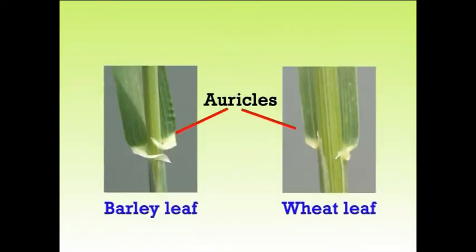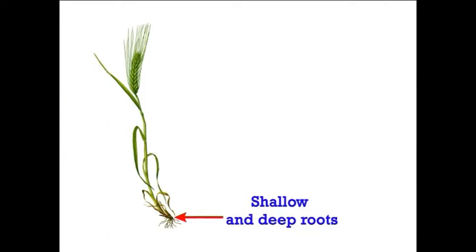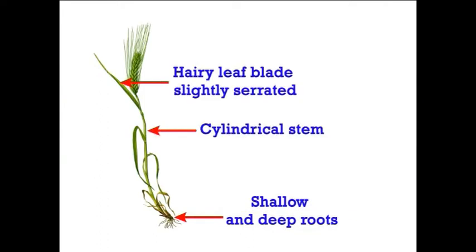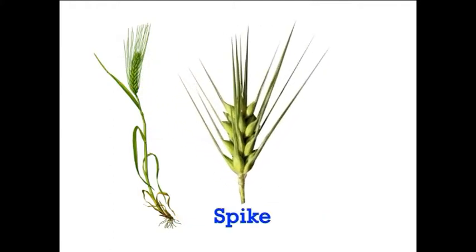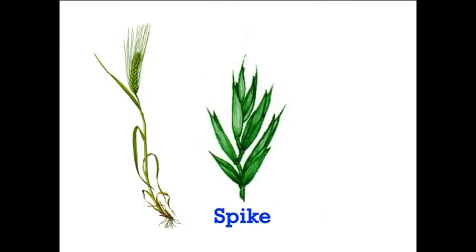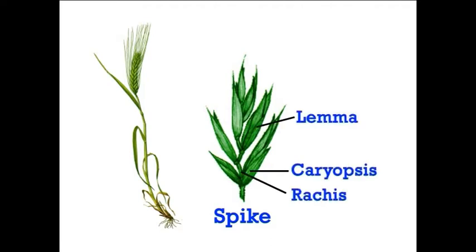All the vegetative characters are like wheat, except that the auricles of the leaf are conspicuous and very much pronounced, which clasps the culm. Barley consists of shallow and deep roots, cylindrical stem, hairy leaf blades, slightly serrated, inflorescence known as spike or head at the nodes of a zigzag rachis, and grain called caryopsis consisting of lemma, palea, and rachilla.